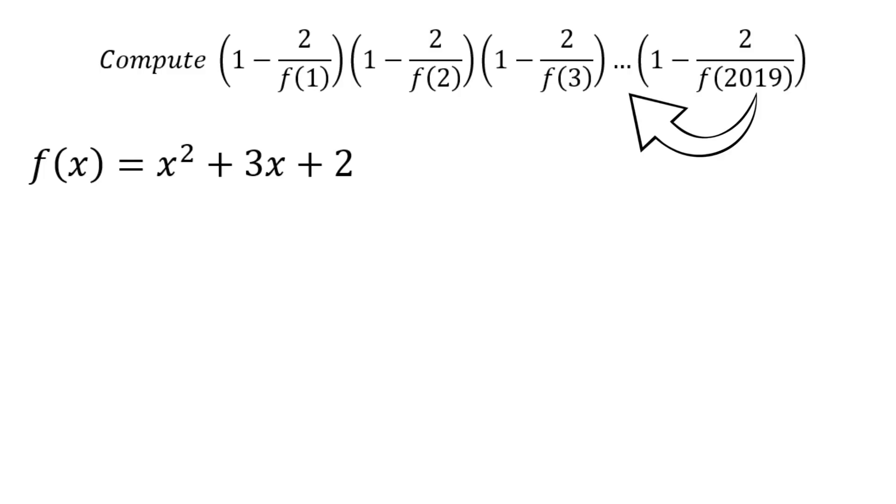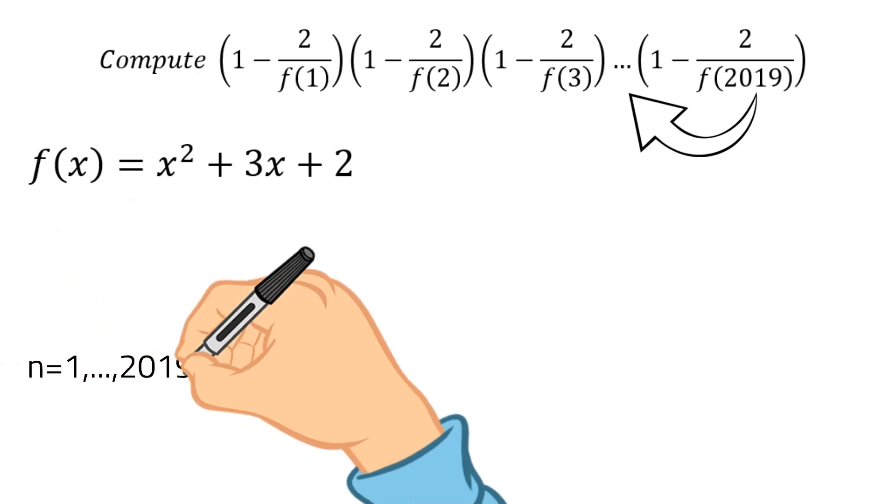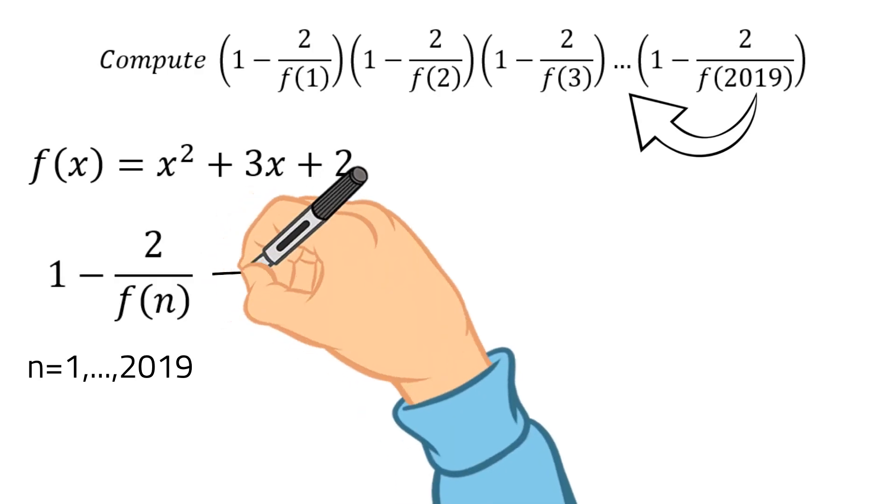So let's try to find some pattern to simplify it. A good starting point is to analyze a general form of a multiplier from this pattern. Assuming n ranging from 1 till 2019, we can write the general form for the multiplier as the following.